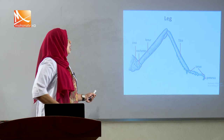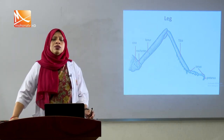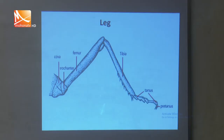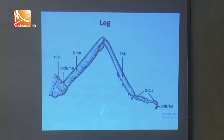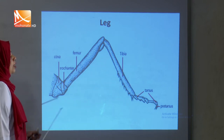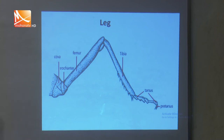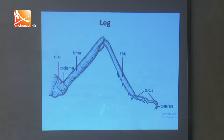The Grasshopper has three pairs of legs; each thoracic segment bears one pair. The last pair of legs is very strong, stout, and large, adapted for jumping. Grasshoppers use their legs for walking and climbing, but the last pair gives them the ability to jump long distances — this type is known as saltatorial leg. Each leg consists of five segments: coxa, trochanter, femur, tibia, and tarsus, with a pretarsus in front. The tibia and tarsus bear sensory bristles, and the femur of the third pair is the longest and strongest.